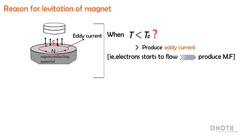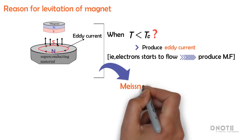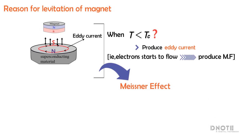This is the reason for the levitation of the magnet, and this phenomenon is called the Meissner effect. Hope you understood the topic.